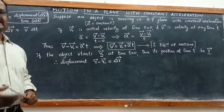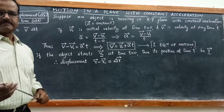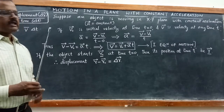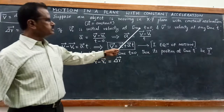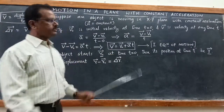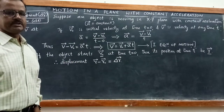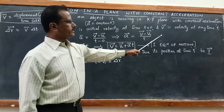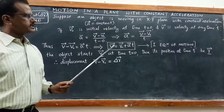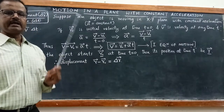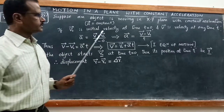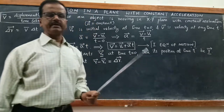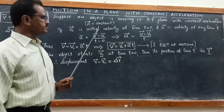Suppose the object is moving in the XY plane with constant acceleration. Let vector v₀ be the initial velocity at time t = 0, and let vector v be the final velocity at any time t.